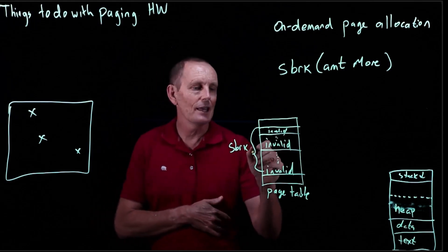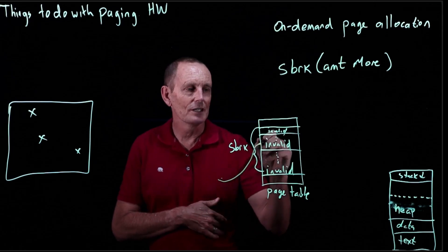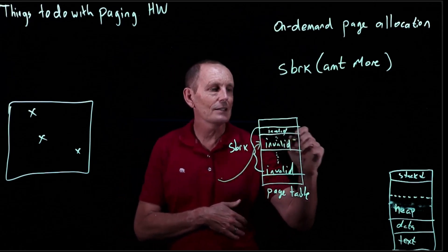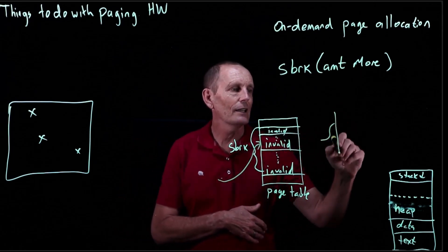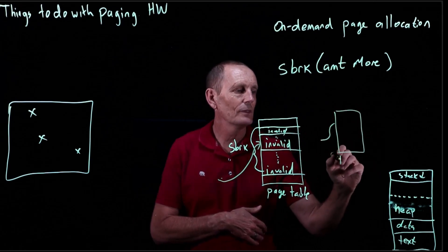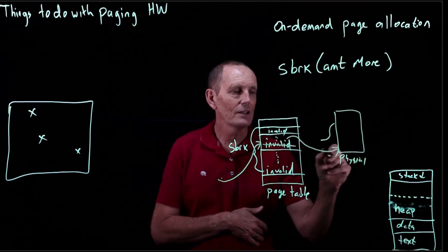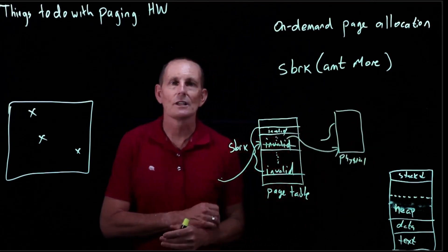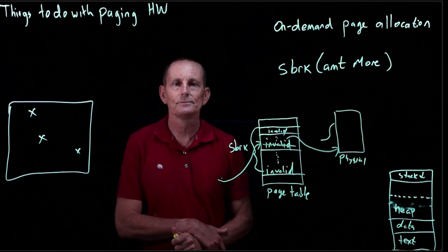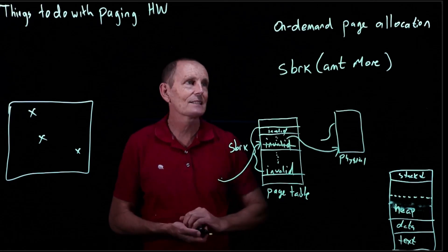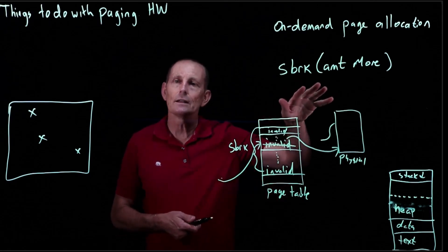And so, let's say that the address was in here. In that case, we would go ahead and allocate a physical page for it, point to that physical page, and of course set the p-bit to be present. So as far as the user is concerned, when they asked for the memory, they think they got it.